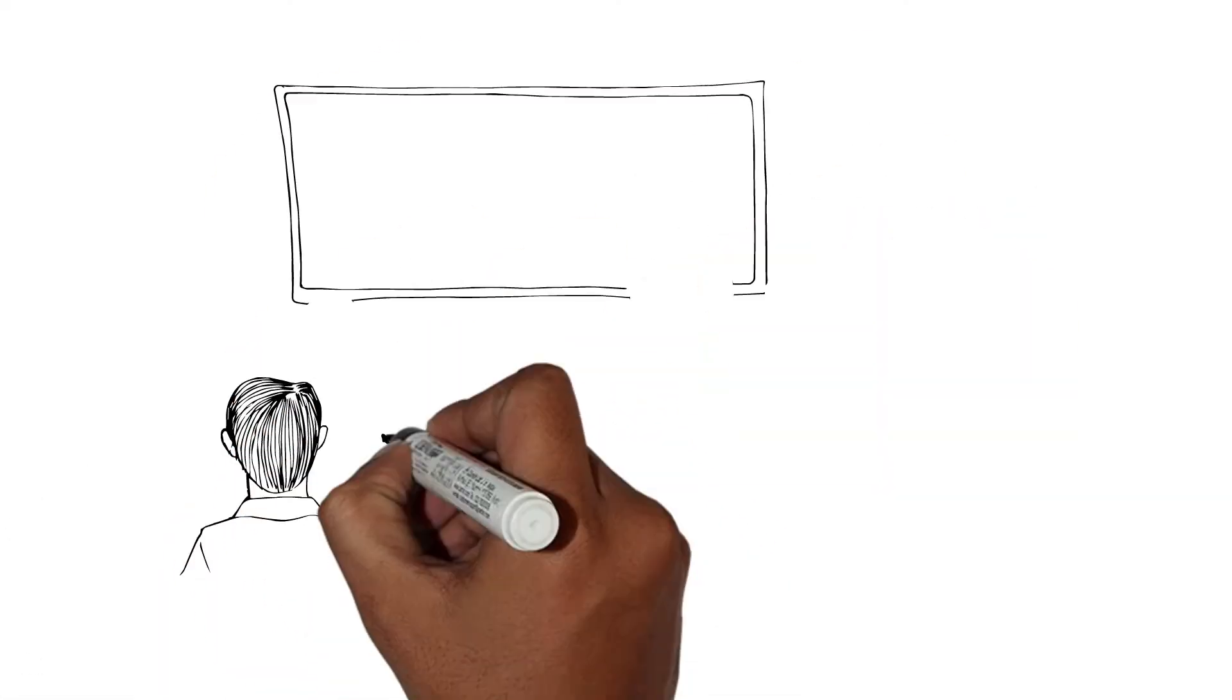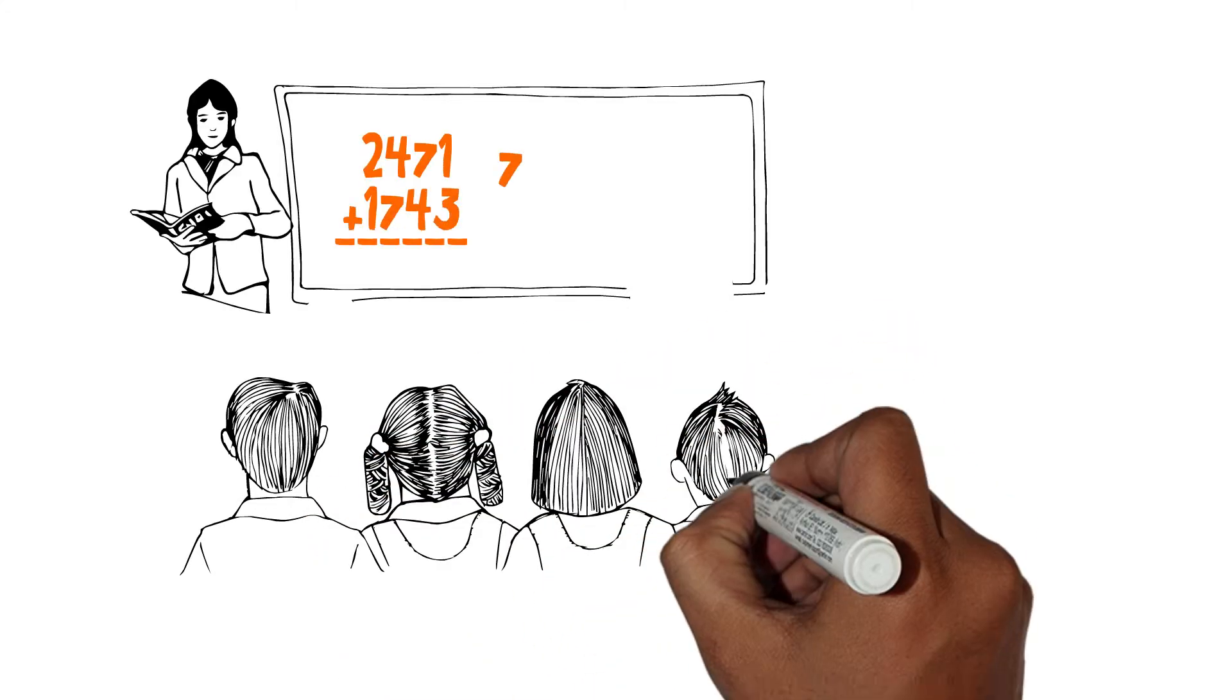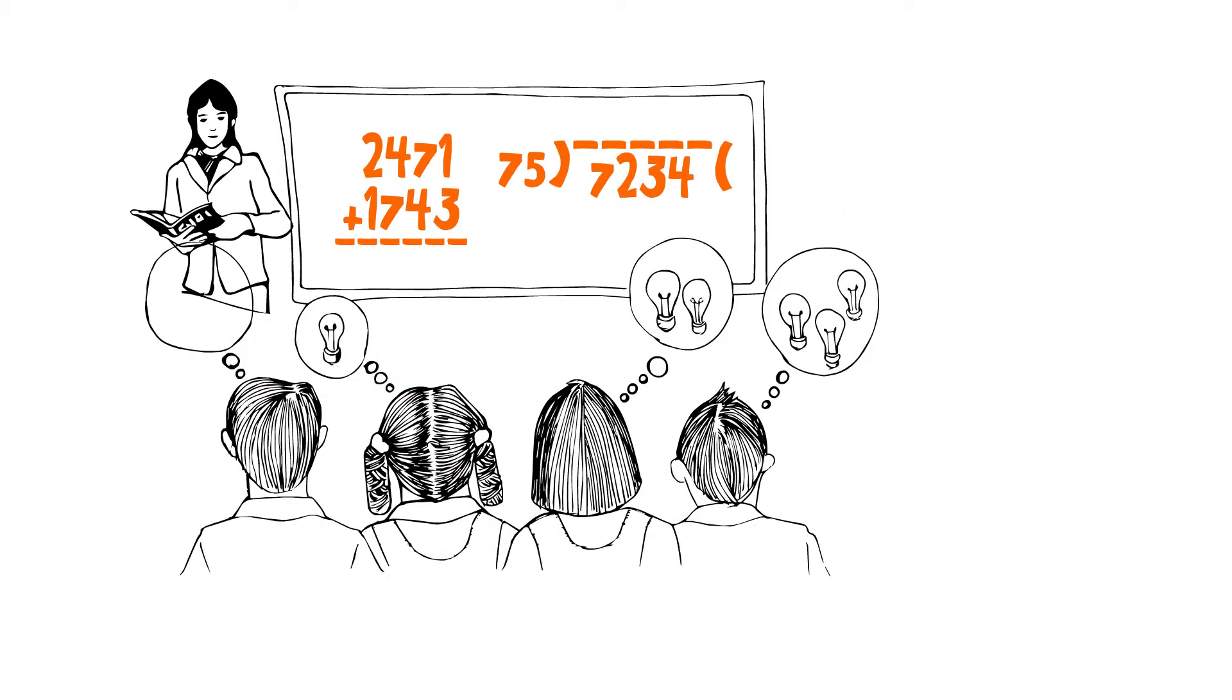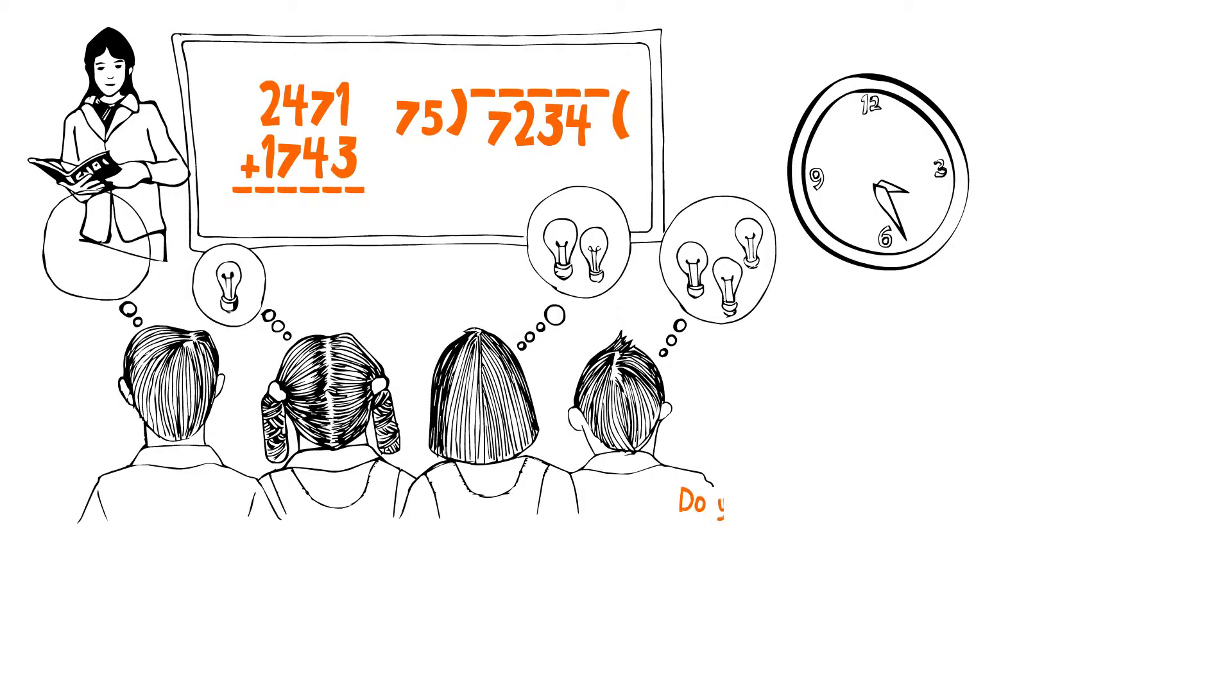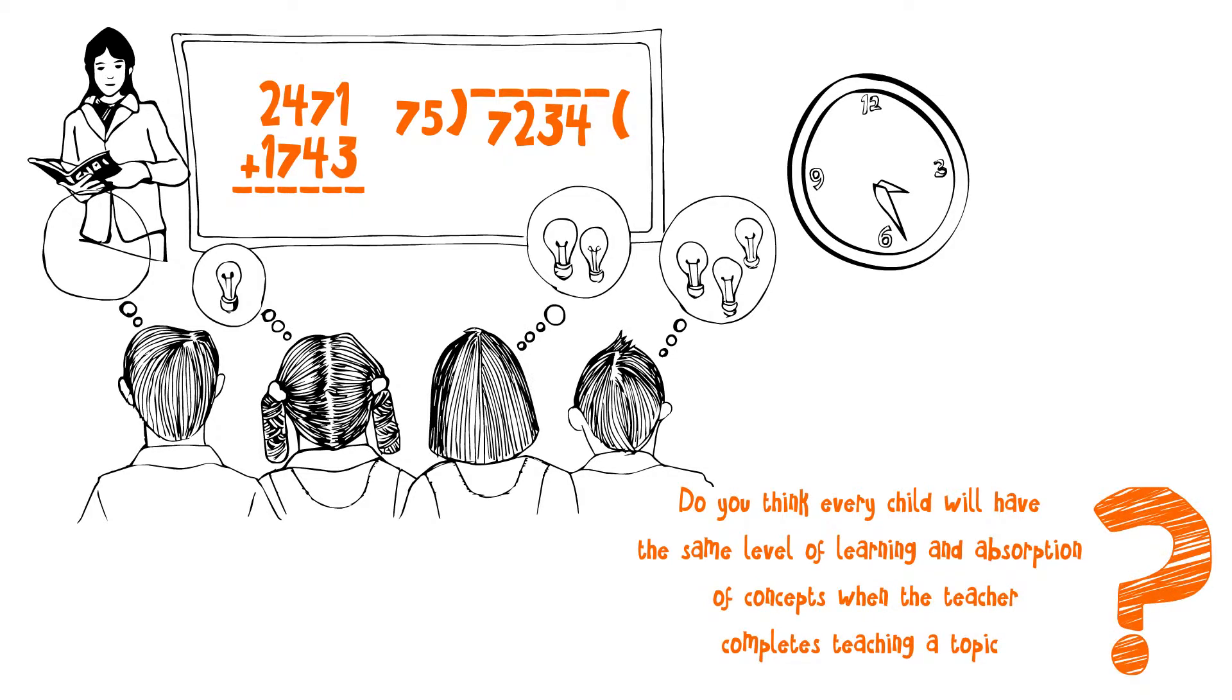Kids of the same age group are part of a large class where a teacher teaches a topic in the same way and within the same stipulated time. Do you think every child will have the same level of learning and absorption of concepts when the teacher completes teaching a topic?